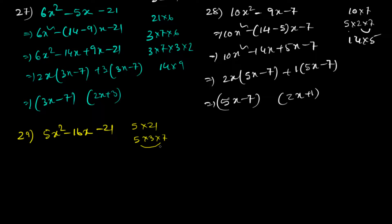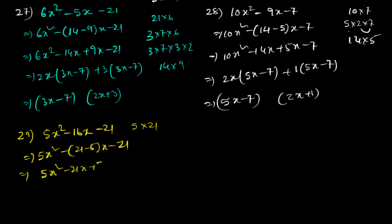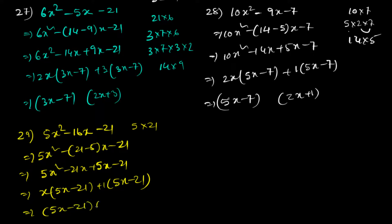Question 29: 5x² minus 16x minus 21. We can use 21 minus 5, which directly gives 16. So: 5x² minus 21x plus 5x minus 21. Taking x common gives (5x minus 21), and taking 1 common gives (5x minus 21). The answer is (5x minus 21)(x plus 1).